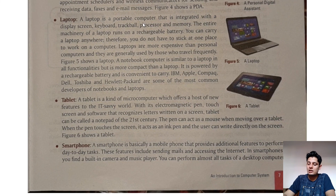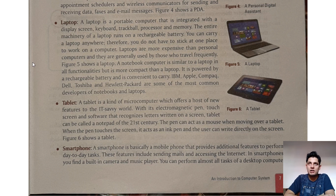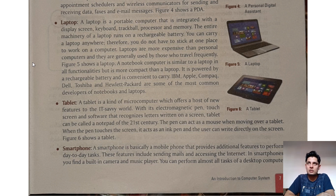A smartphone is basically a mobile phone that provides additional features to perform day-to-day tasks. These features include sending mails and accessing the internet. In a smartphone you find a built-in camera and music player. You can perform almost all tasks of a desktop computer, but with a different operating system.